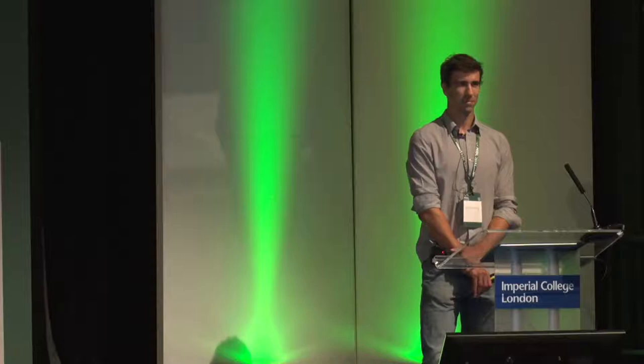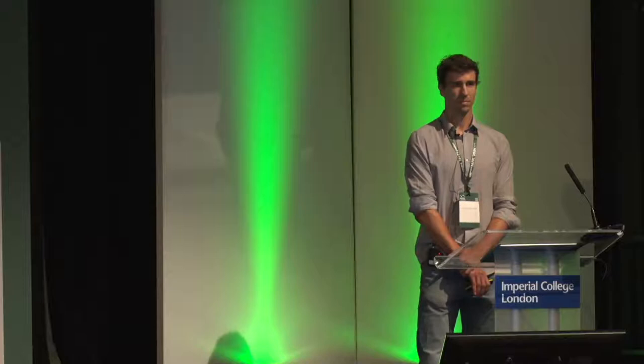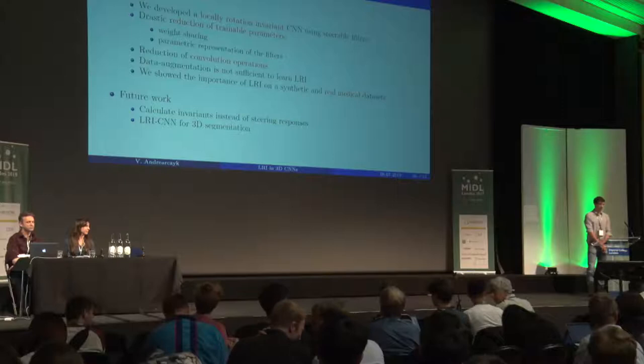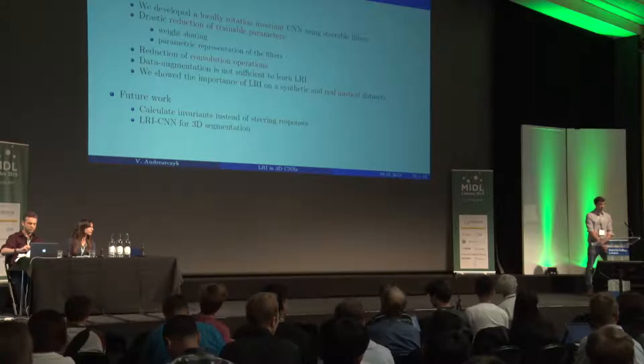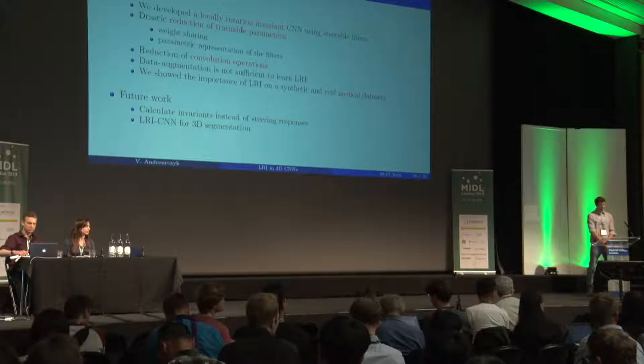Do you use the steerable filters after every layer or just the first layer in the network? Just in the first layer, because we do not propagate the equivariance. Would it be possible to learn whether a feature should be rotationally invariant? There are also features that should not be. It is definitely possible to have two branches, and it could be learned.